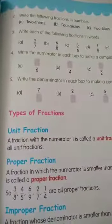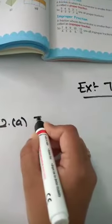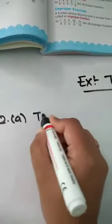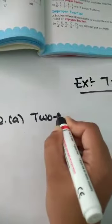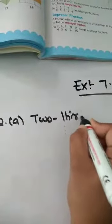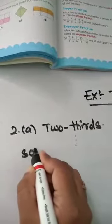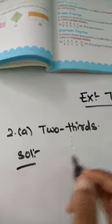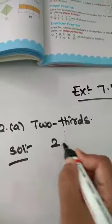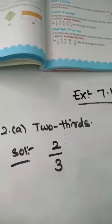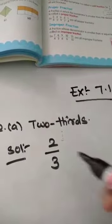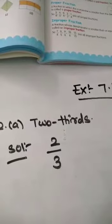So we have to write the fraction in numbers. Exercise 7.1 second bit, first question. So 2 thirds — like this you have to write. I have written it in number: 2 thirds.